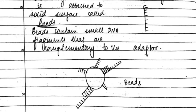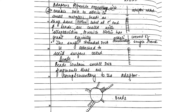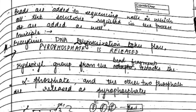The bead structure contains small DNA fragments that are complementary to the adapter — do draw small diagrams wherever necessary, it helps with understanding. Every time DNA polymerization takes place, pyrophosphate is released.